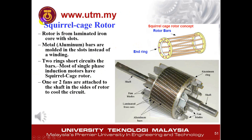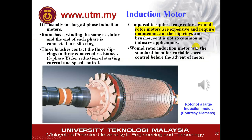There are two types of rotor for the induction machine. The first is the squirrel cage rotor — you need to know how to draw it. An important thing to know is that the wound rotor is more expensive compared to the squirrel cage rotor and requires maintenance of the slip ring.